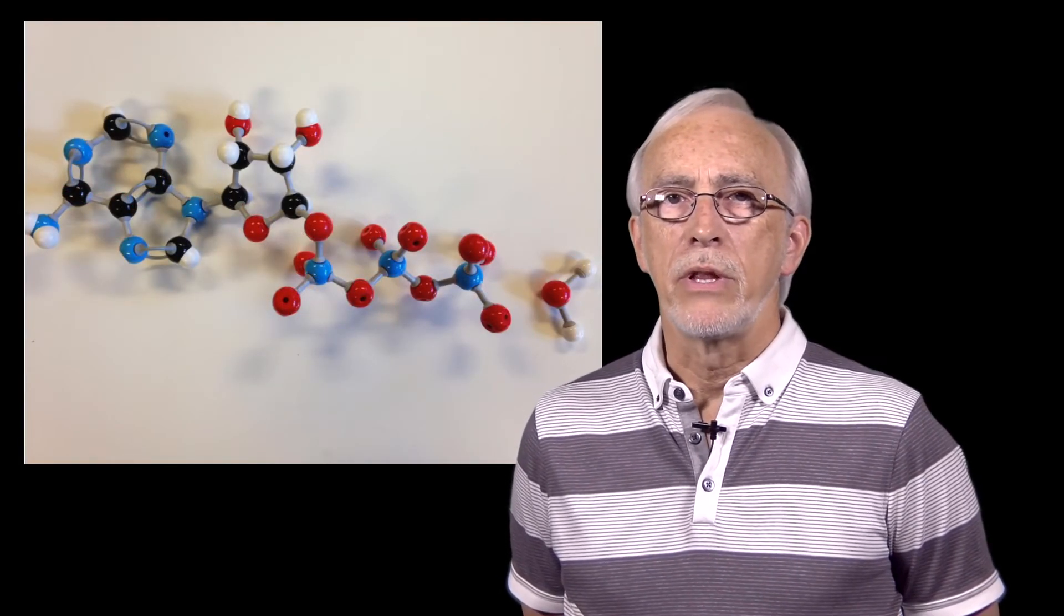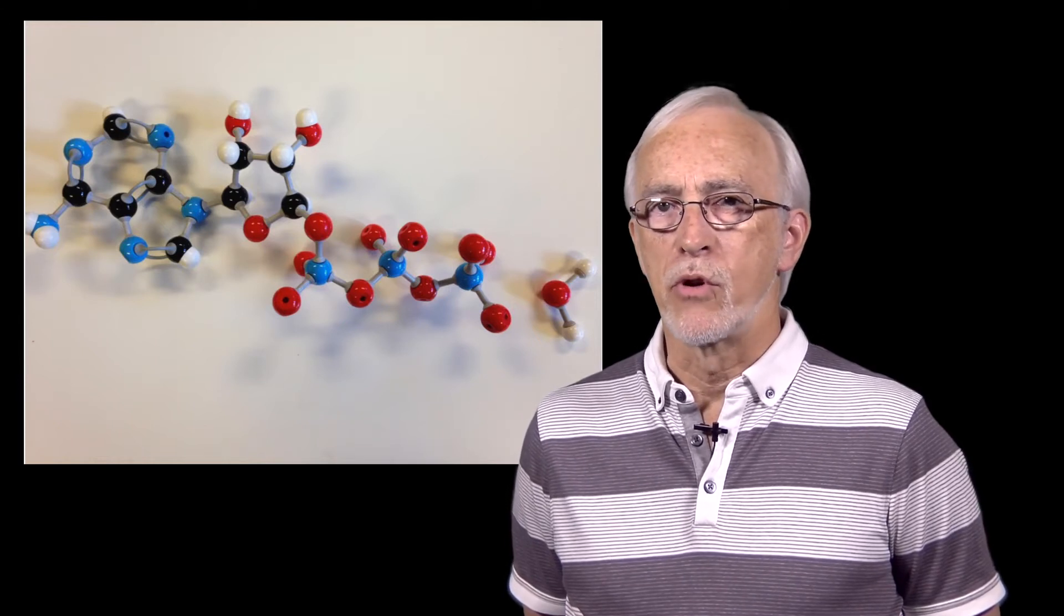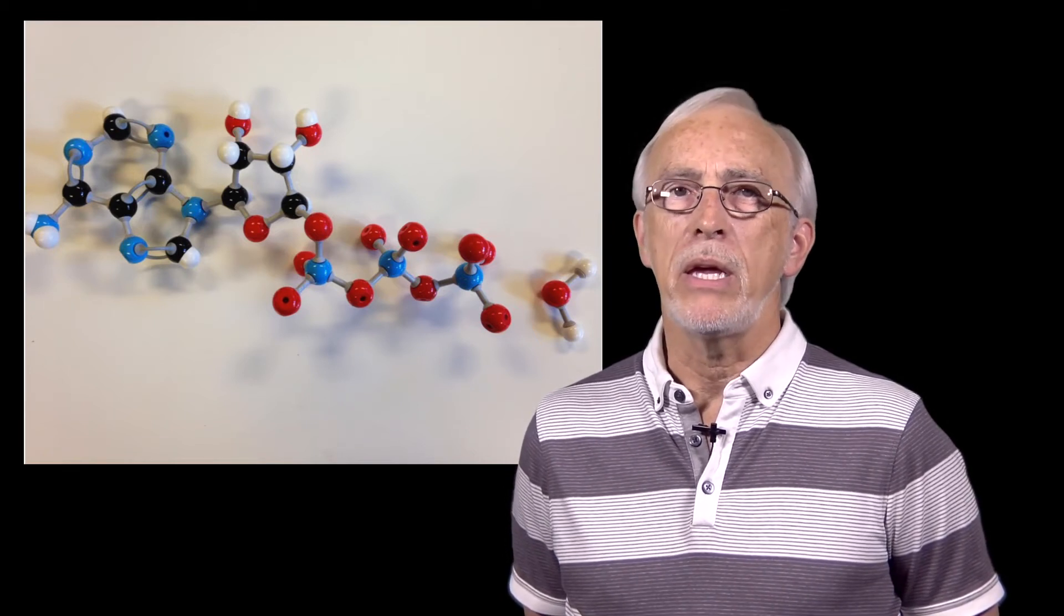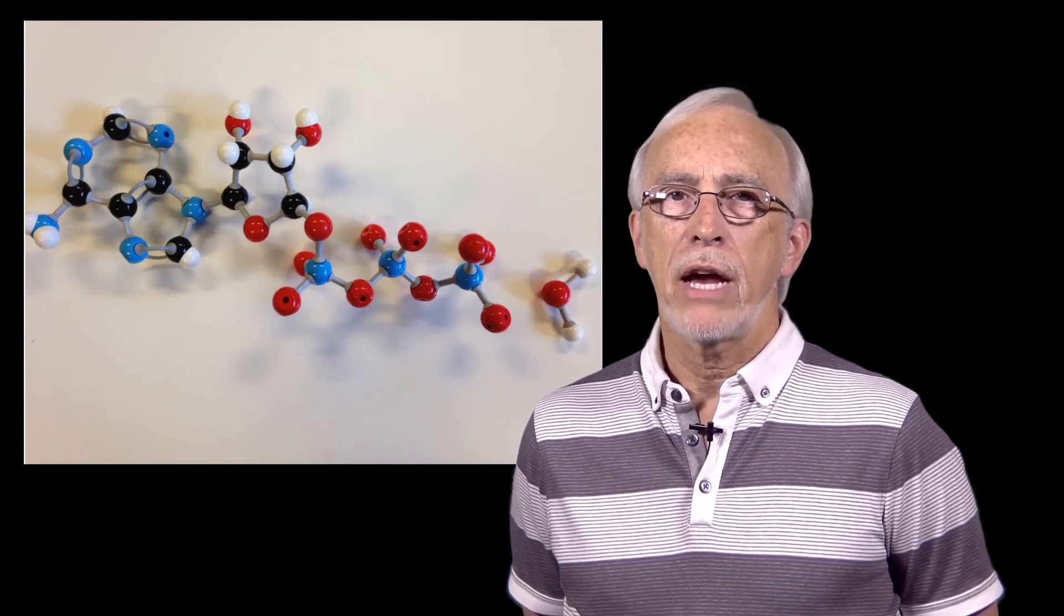The cycle completes when the site opens up into the open form again. A key arginine group moves away from the now-formed ATP, preventing the transition state from reforming, and thus preventing ATP from converting back to ADP. This weakened attraction allows ATP to release from the binding site.